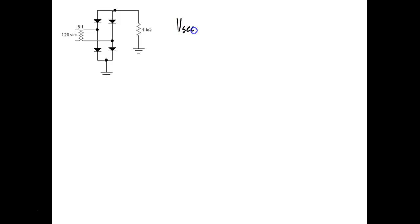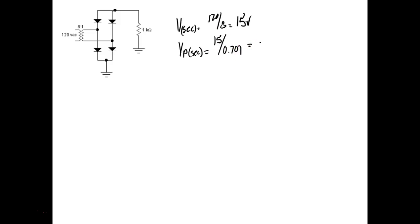So my V secondary is going to be equal to 120 divided by 8, which gives us 15 volts. And then my V peak of the secondary is going to be equal to 15 divided by 0.707. We're using the whole transformer — the center tap is not connected. What we do is we look at what we consider to be our common — the bottom of the circuit. The top of the rotation sets the polarity. So these two diodes are setting the polarity of the load — their cathodes are pointing toward the transformer, so this would be a negative supply.